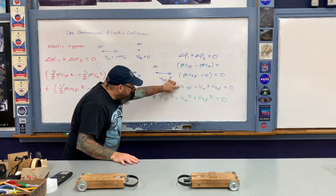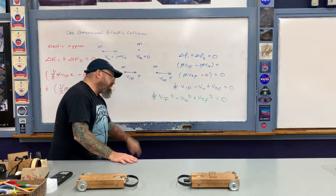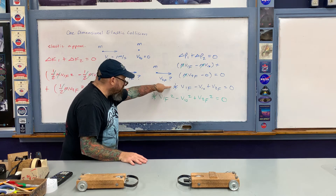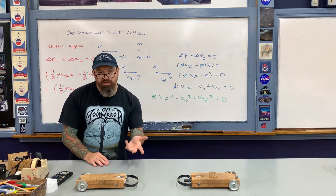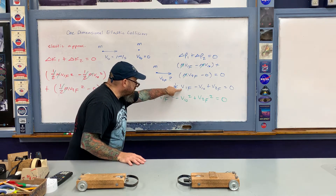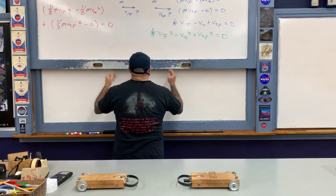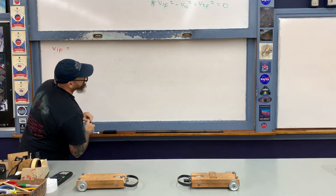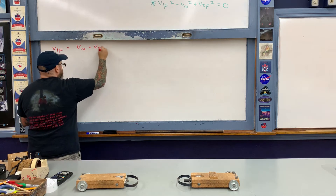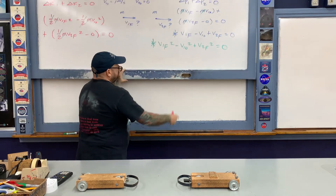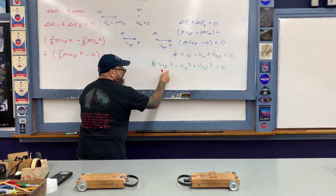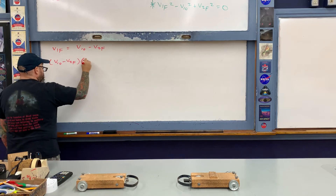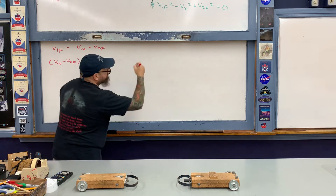To solve the system algebraically, take the momentum expression and solve it for v1_final, then substitute into the kinetic energy expression. Always work this way — never solve for an unknown from the kinetic energy equation first, as that forces you to deal with square roots. Solving from momentum: v1_final = v1₀ − v2_final. Squaring this and substituting into the kinetic energy equation by FOILing out the expression.